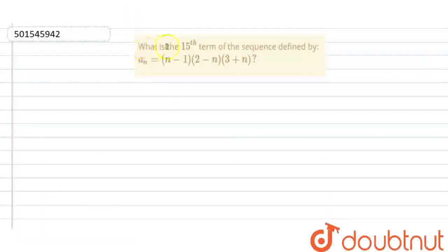Hello guys, so today our question is what is the 15th term of the sequence defined by an is equal to n minus 1 into 2n minus 1 into 3 plus n.